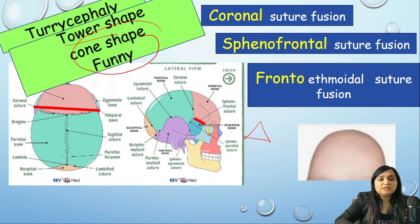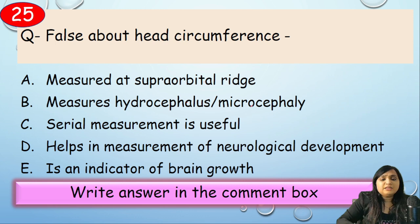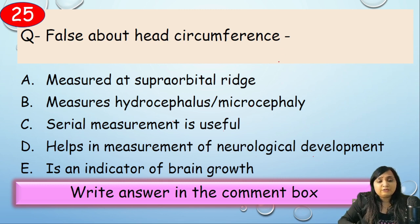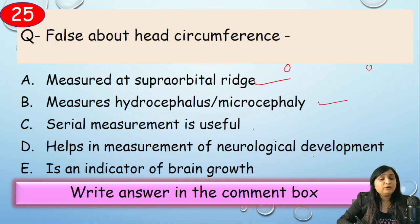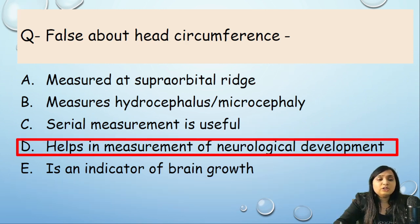False statement about head circumference — measured at supraorbital ridge, measures hydrocephaly and microcephaly, serial measurement is useful, helps in measurement of neurological development, or is an indicator of brain growth? HC is measured between the supraorbital ridge and the prominent part of the occiput — correct. It measures hydrocephaly and microcephaly — correct. Serial measurement is very useful — correct. It is a good indicator of brain growth — correct. But it does NOT measure neurological development. So the false statement is: 'helps in measurement of neurological development.'